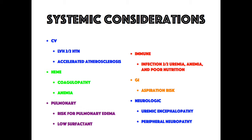There is also anemia in these patients, secondary to low erythropoietin and decreased red blood cell survival. Pulmonary risk includes higher likelihood of pulmonary edema due to low albumin and low oncotic pressure, and decreased surfactant increases their likelihood for atelectasis. Their immune system is susceptible to infection secondary to uremia, anemia, and poor nutrition. For GI, they are an aspiration risk as well.